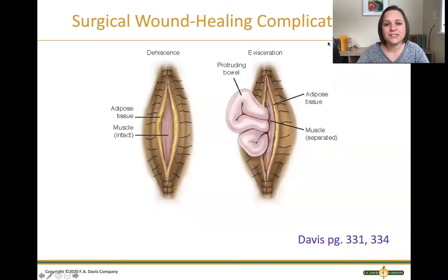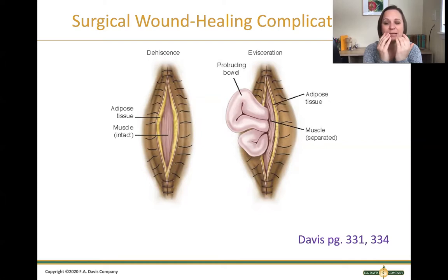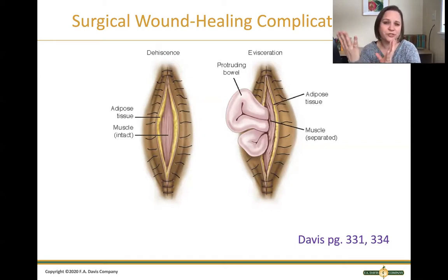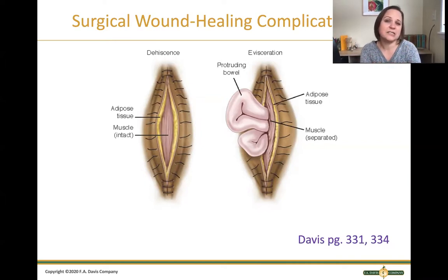A reminder about wound healing: dehiscence is when the skin itself separates from the wound. Evisceration is worse — that's when an organ actually protrudes through the muscle, such as a bowel protruding through, which is a surgical emergency compared to dehiscence. The severity of dehiscence depends on how much skin has separated versus how much remains approximated.